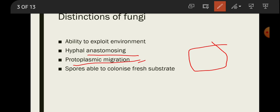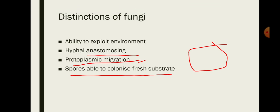Another character is that spores are able to colonize fresh substrate. When fungi find any fresh substrate — like bread or fruits such as oranges — they are able to colonize and make small colonies on them. These features make fungi different from other organisms. Fungi are heterotrophic organisms; they do not make their own food.